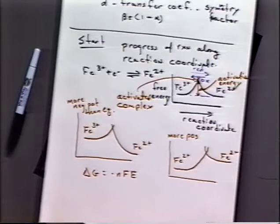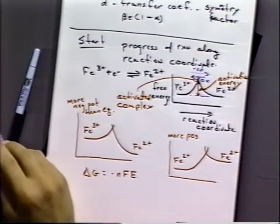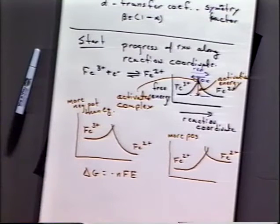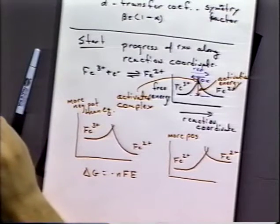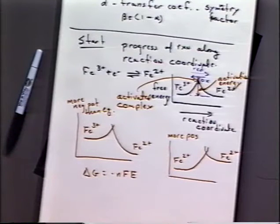I want to point out something on page EC3-3 of your notes: at the bottom, there are three diagrams in a row. There's iron 3+ to iron 2+ where it says 'more positive than equilibrium.' That label says 2+ to 3+, but it should actually be 3+ to 2+. The bottom of those three on the right-hand side, you see it goes from 2+ to 3+, but it should be 3+ to 2+. Let's redraw that curve in a little more detail.